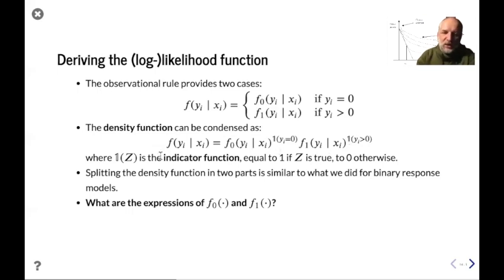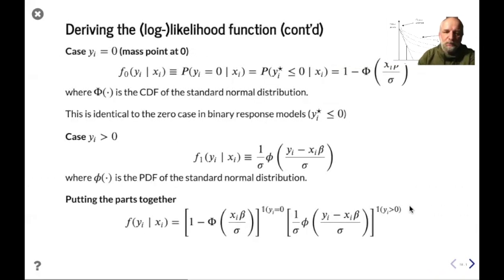And then the density function can be written, basically condensed based on these two cases. Either you have y equal to zero or you have y being positive, and then you pick either these two. This is the indicator function.